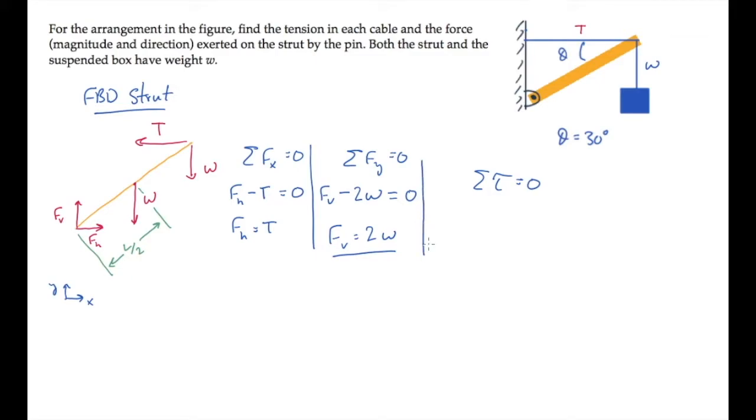Now we can sum torques on the strut, making that equal to zero. Remember that the torque produced by some force has a magnitude Rf sin phi, where R is the distance from the pivot to where the force is applied, and phi is the angle between the R vector and the force. This is also equal to the force times the moment arm, D. That's the method I'll use here, so we'll illustrate the moment arms in a minute.